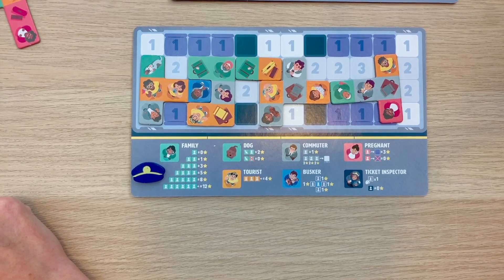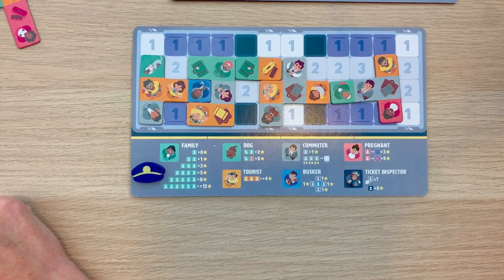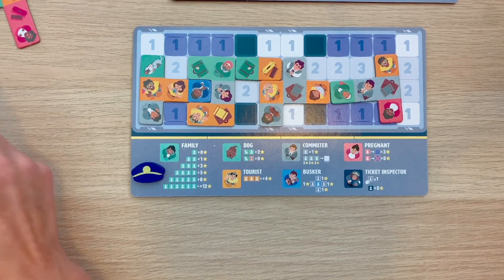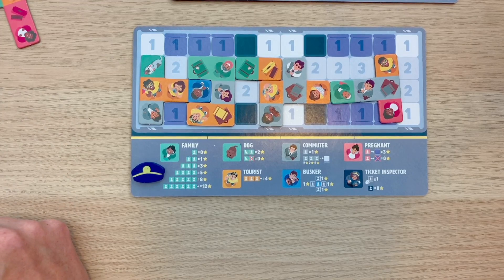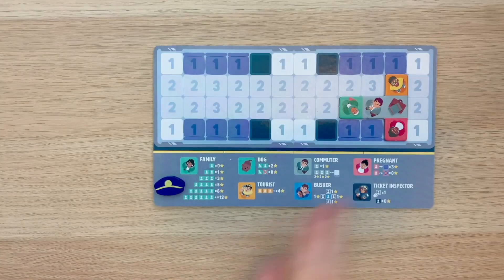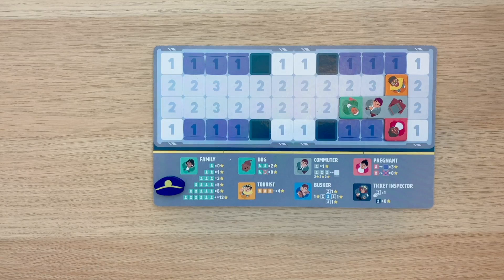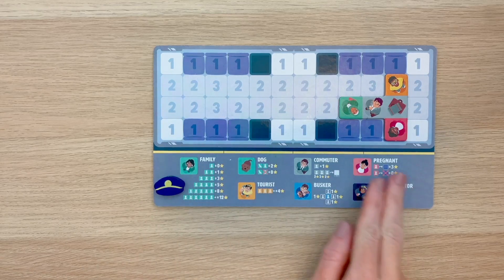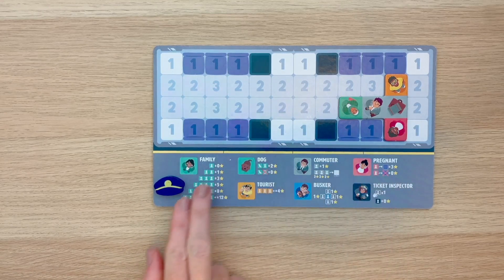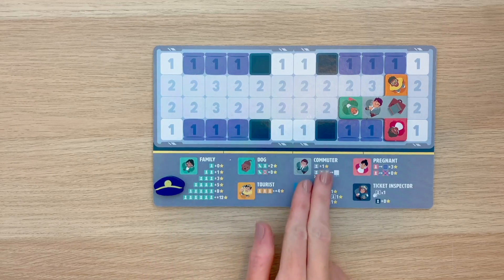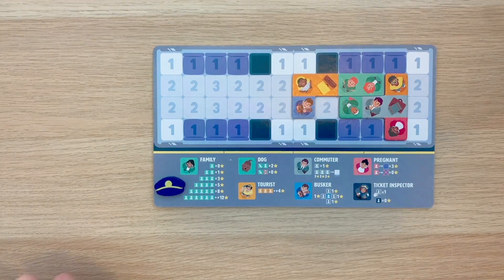Gameplay is going to continue just like this until the train reaches the last stop. At that point, we'll finish the round and discard the leftover pieces in the queue. So now that we understand some of those placement rules, let's go ahead and look over how some of these passengers score. At the bottom of your player board, you will be able to see reminders of these throughout the game.